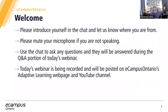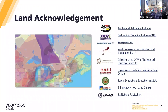Today's webinar is being recorded and will be posted on eCampus Ontario's adaptive learning webpage as well as our YouTube channel. At the start I'd like to take a moment to honor and acknowledge that the offices of eCampus Ontario are located on the traditional territory of many nations, including the Mississaugas of the Credit, the Anishinaabe, the Chippewa, the Haudenosaunee, and the Wendat peoples, and is now home to many diverse First Nations, Inuit, and Métis. I recognize and am grateful for the legacy of all past, present, and future generations of the First Peoples of this land.